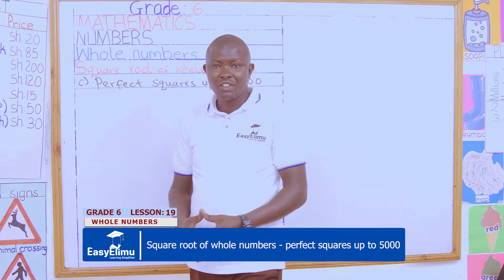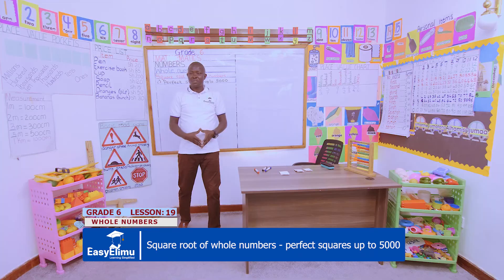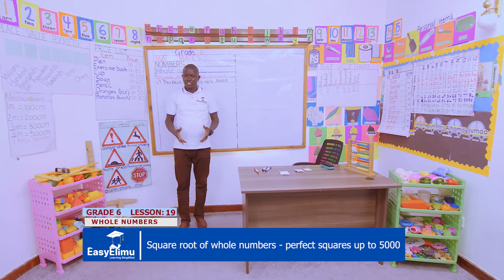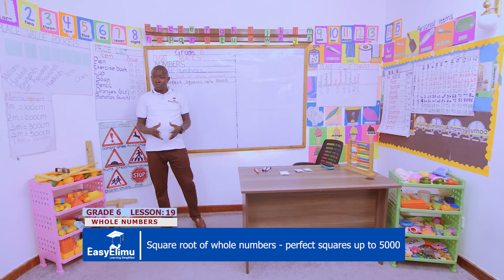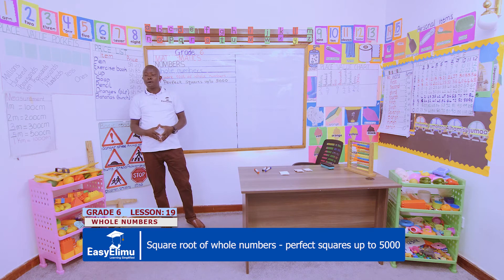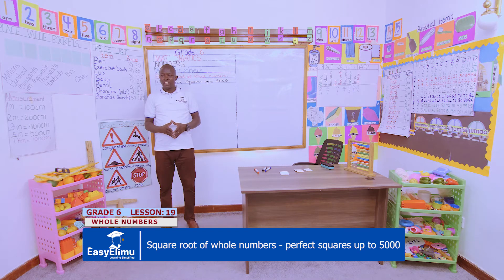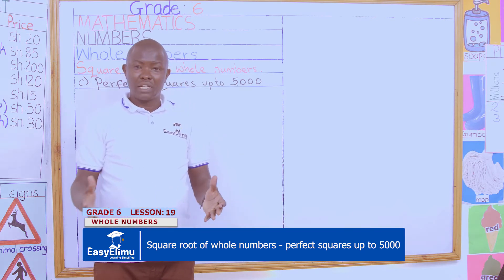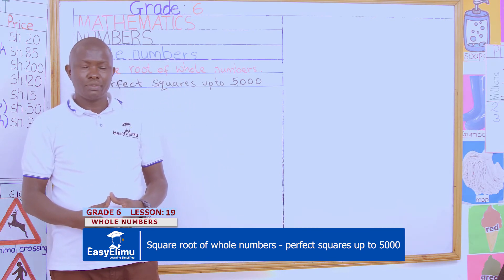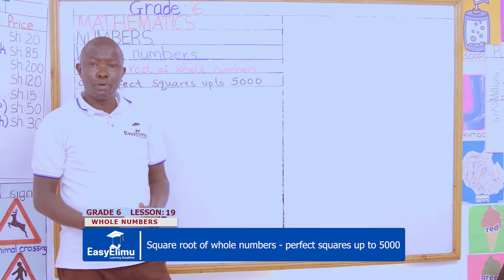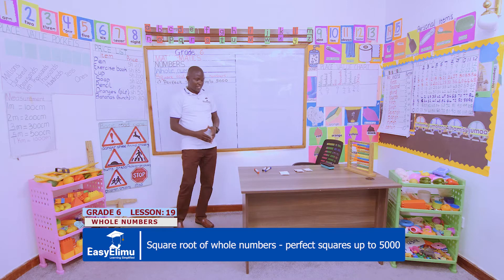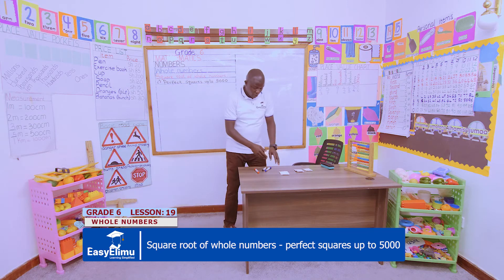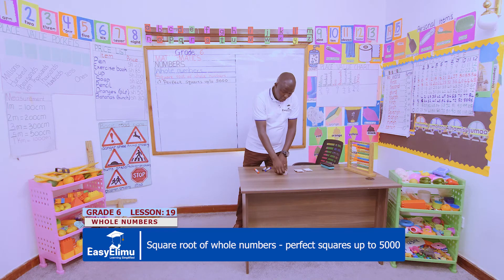In our previous lesson we learned what is a square root, what is a perfect square, and how we use the factor tree to find the perfect square of a number. Now I would like us to group up and identify the following number cards.